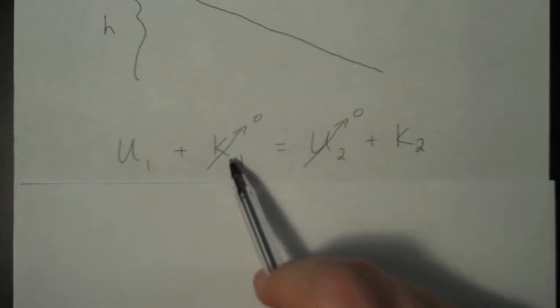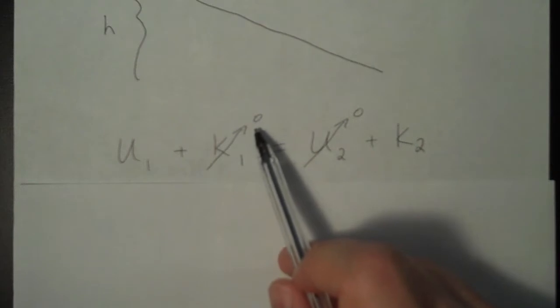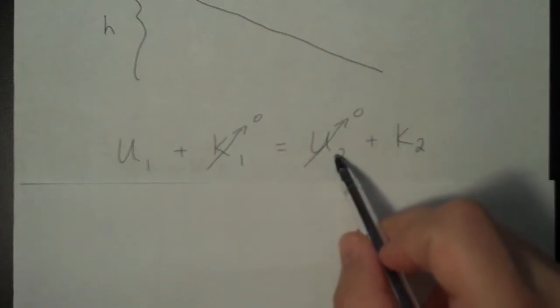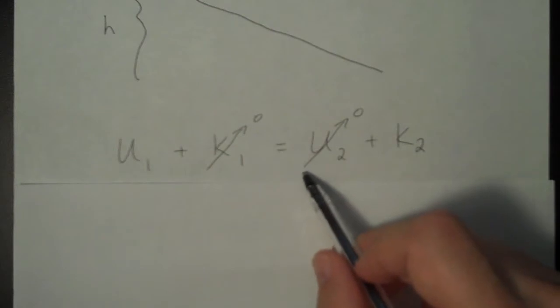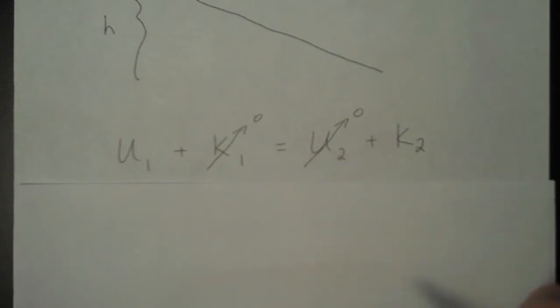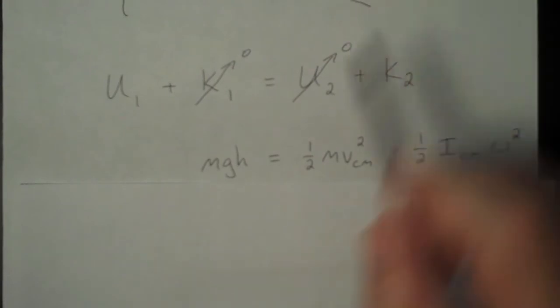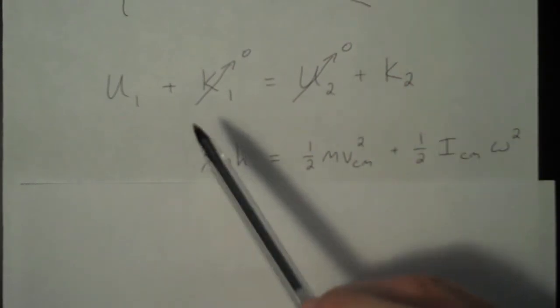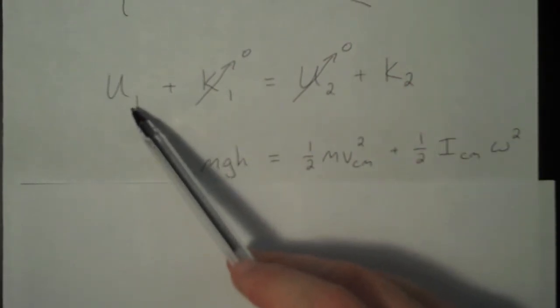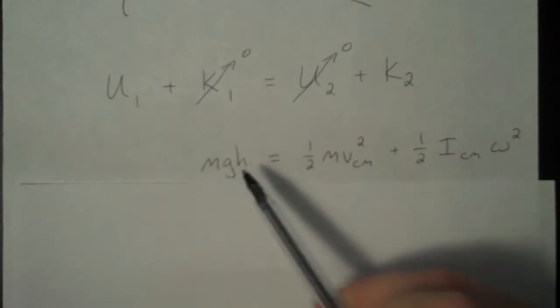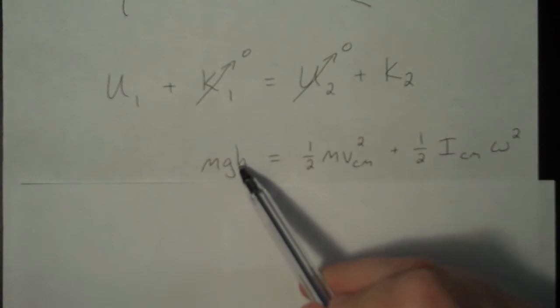If that cylinder starts from rest, the initial kinetic energy is zero. And when you reach the bottom of your inclined plane, the gravitational potential energy is also zero. Plugging in some values, remember what the gravitational potential energy is. It's mg times your height. And I labeled the height with an h.